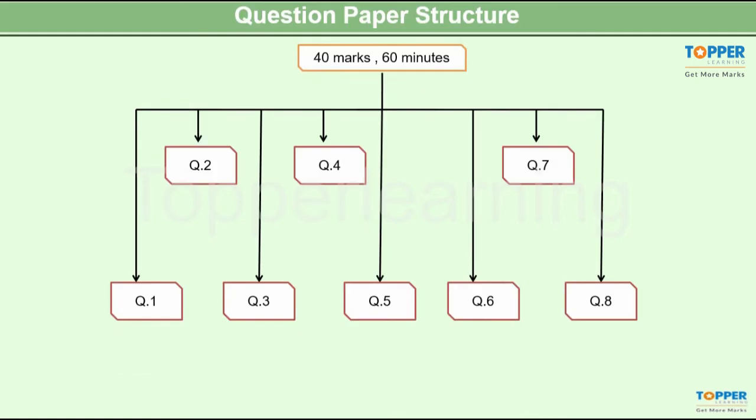Let's first see how was the question paper structure. The CISCE had already released a specimen paper for biology to enable students to get an idea of the type of questions, and the actual board paper turned out to be a replica of the specimen paper released by ICSE. The entire question paper was of 40 marks and the students were given 60 minutes to solve the paper, and this was inclusive of the reading time.